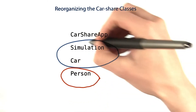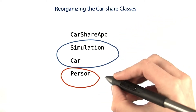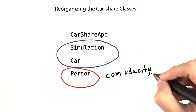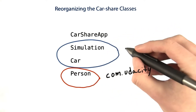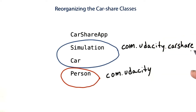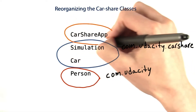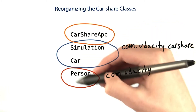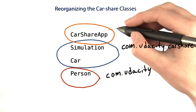These three classes could be organized into packages. The person class might go into a more general com.udacity package, and the simulation and car would go in a more specific car share package. The car share app is just a main program that uses these other things, so we'll keep it in the default package.